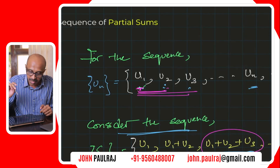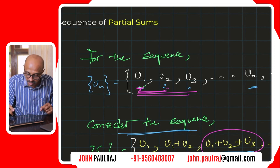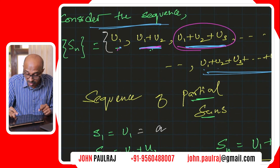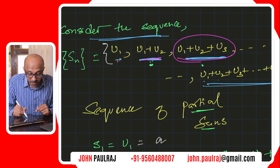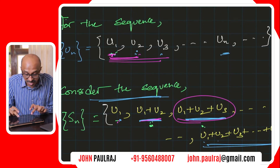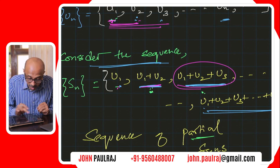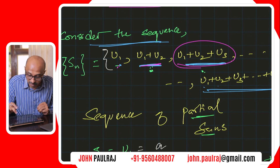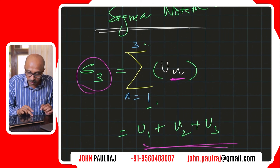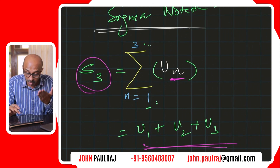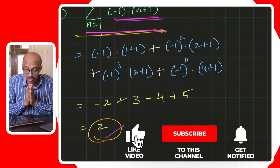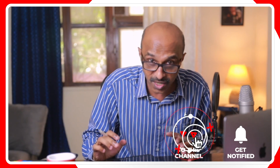So what did we see today? Given any original sequence UN, you can write a special sequence called the sequence of partial sums. Each term is a sum — the sum of the first two terms of the original sequence gives the second partial sum, and so on. This sequence of partial sums, called SN, can be represented using sigma notation. We saw how to evaluate sigma notation both by hand and using the GDC. We'll continue this discussion on sequences and series in the next video. See you in that one.